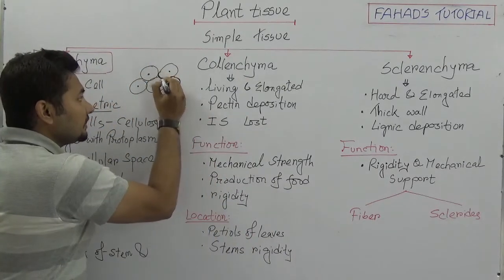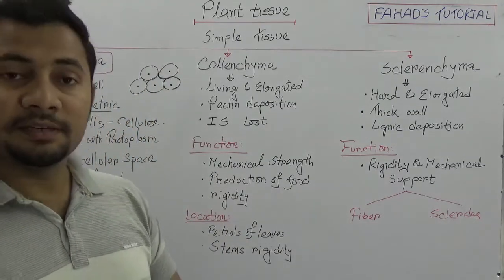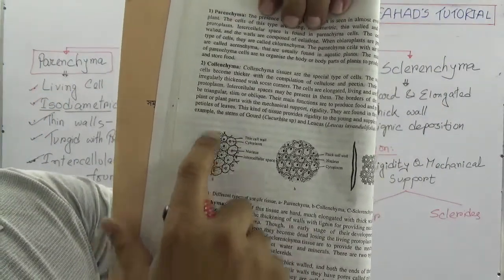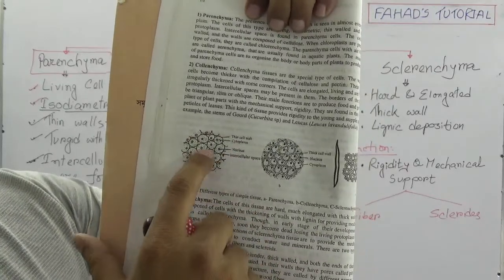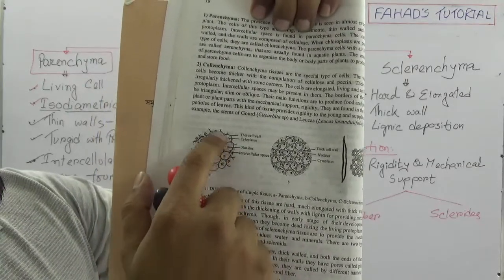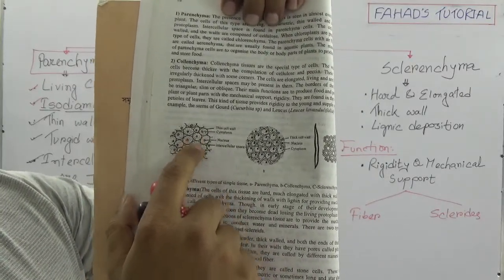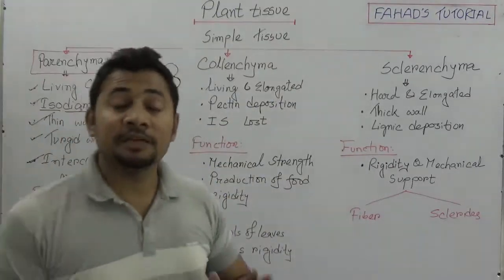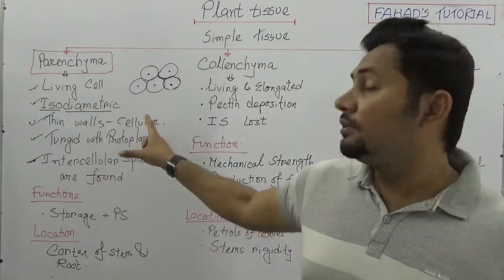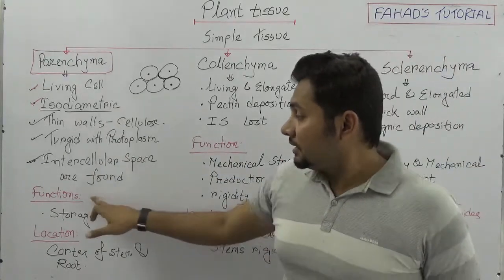If you see the picture of parenchyma cells in your book, it will be similar to what is shown here. The cells are oval or circular in shape. Each cell inside contains cytoplasm and nucleus. All cells are joined together with intercellular space present. The most important thing to remember about parenchyma is thin walls due to cellulose and the presence of intercellular space.